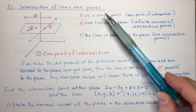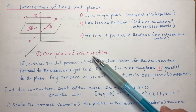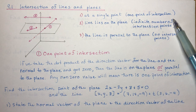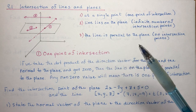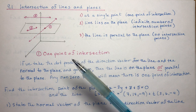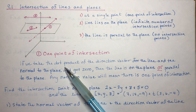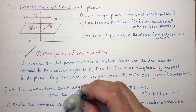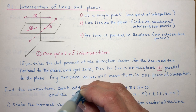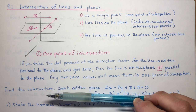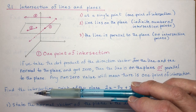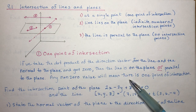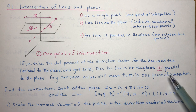Let's break this down into the three cases, starting with one point of intersection. To check any of these three possibilities, the very first thing we're going to do is take the dot product. If the dot product of the direction vector for the line and the normal to the plane gives us zero, it means the line is either on the plane or parallel to the plane — they're in the same direction. Any non-zero value will mean there is one point of intersection.